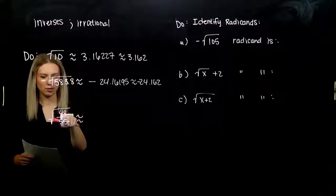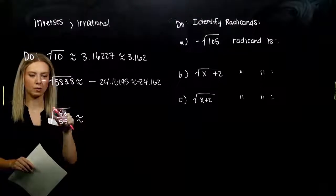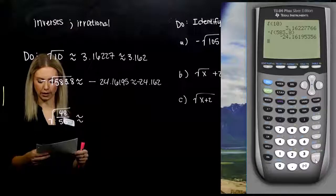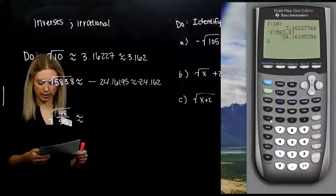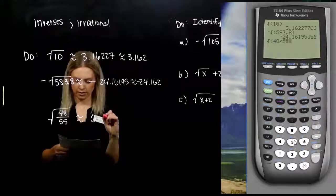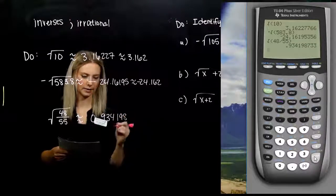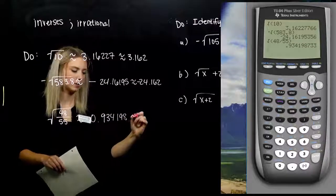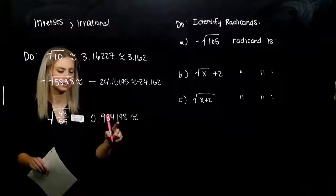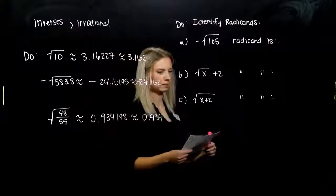And, very last, same thing with the fraction. There isn't a perfect square that will multiply out to 48 over 55. So, again, plugging it into the calculator, square root of 48 over 55. We're approximating it to be 0.934198. And we want to approximate it to three decimal places. So, one, two, three. Thing to the right is less than five, so we chop off the rest of that number.